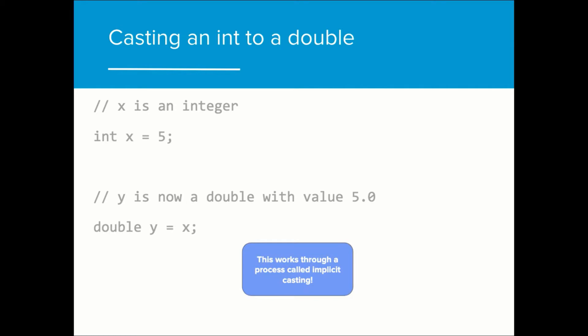Interestingly, the same doesn't apply when attempting to do the same from int to double. This is referred to as implicit casting. Implicit casting is when Java automatically casts the value correctly without the programmer needing to do so. Java will cast an int to a double, but will not cast a double to an int value.